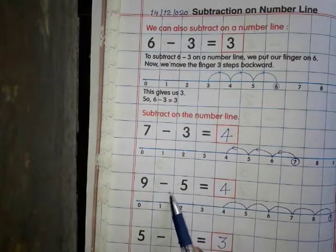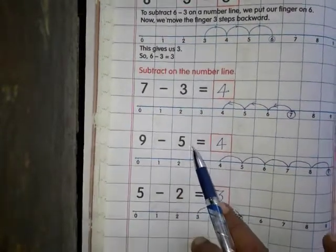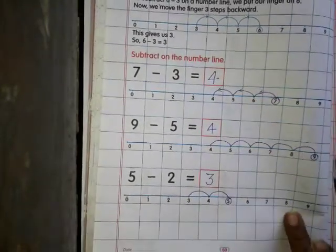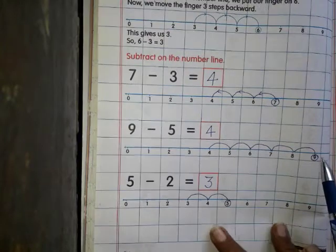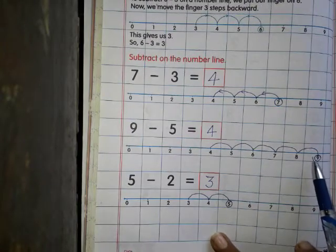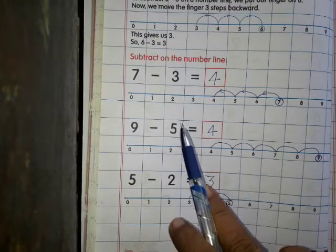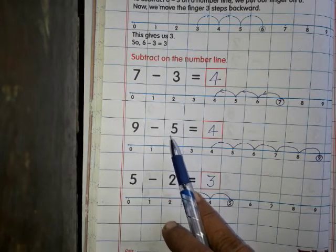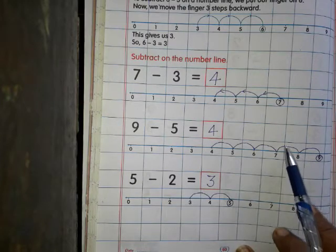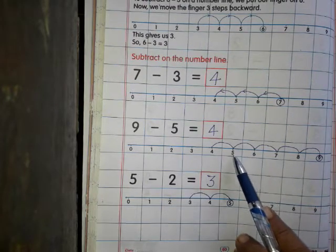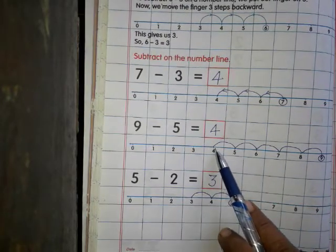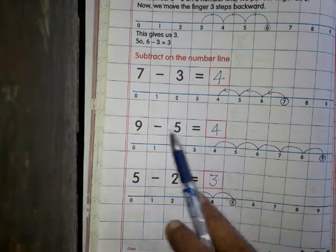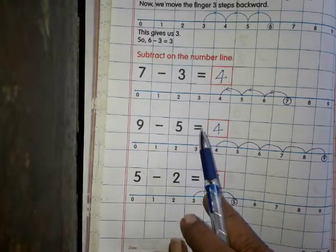Next, 9 minus 5. अपनी finger को हम कहां रखेंगे? 9 पर। 9 पर हमने अपनी finger को रखी, अब हमको minus 5 करना है। तो हम backward आएंगे, कितने step? 5 step — 1, 2, 3, 4, 5 step हम backward आए, और आ गए हम 4 पर। तो answer आए 4. 9 minus 5 is equal to 4.